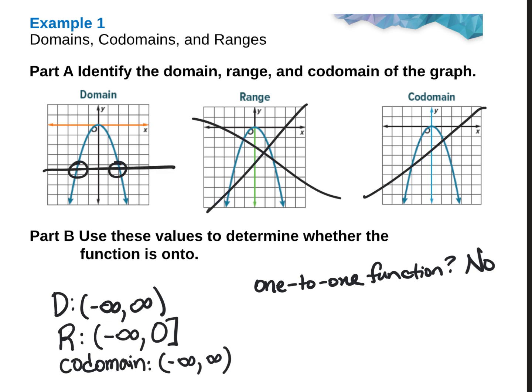Is this a one-to-one function? Does it pass the horizontal line test? No, it does not — it would fail the horizontal line test right here. Is it an onto function? An onto function requires the range and codomain to be the same. Are my range and codomain the same? No, they are not. So it is neither one-to-one nor onto.